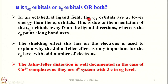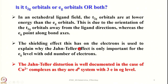In an octahedral ligand field, the t_2g orbitals are at lower energy than the e_g orbitals, due to the orientation of t_2g orbitals away from the ligand direction, whereas the e_g orbitals point along the bond axes (z, x, y directions). The shielding effect this has on electrons is used to explain why the Jahn-Teller effect is only important for the e_g level with an odd number of electrons. Jahn-Teller distortion is well documented in copper(2+) complexes, as their d⁹ system has 3 electrons in the e_g level.